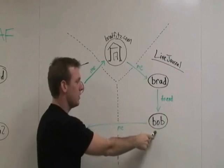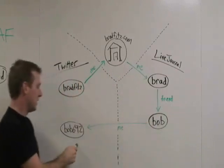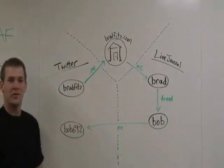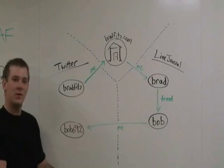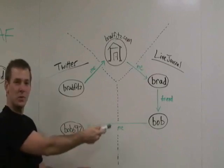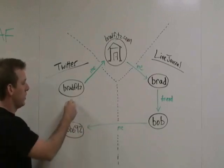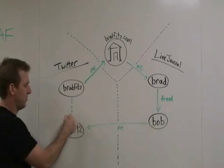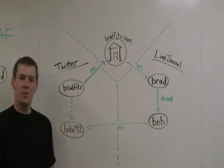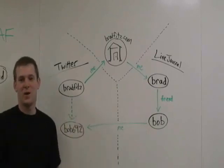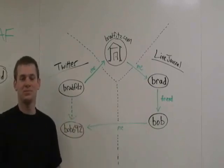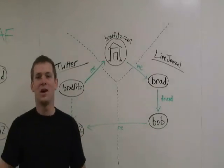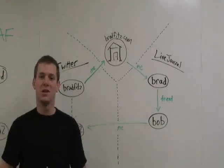My LiveJournal has a friend link to Bob, and Bob has a me link to Bob692 — this crazy username I would have never guessed. But it turns out one of my friends from LiveJournal is already here on Twitter. So Twitter, or my application, can say why don't you be friends with Bob? And now I have friends and I'm happy. So that's one example of something fun you could do with the Social Graph API, and we're looking forward to seeing what you do.